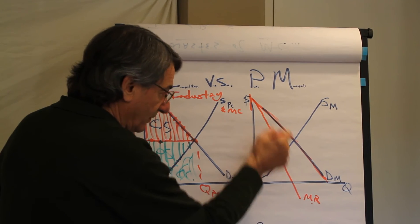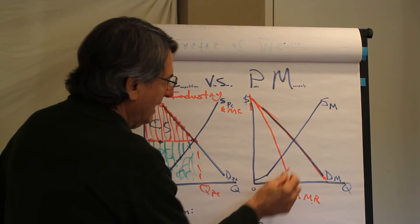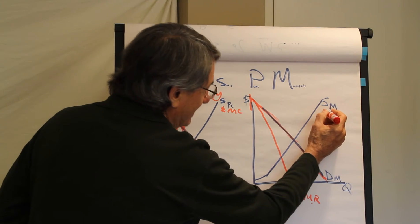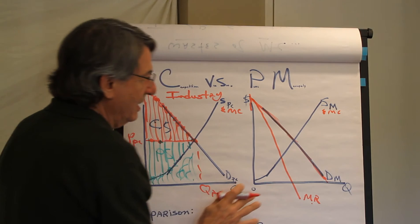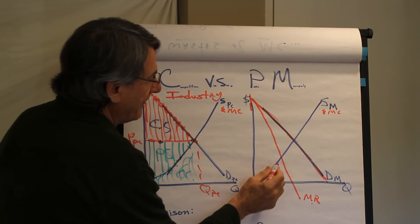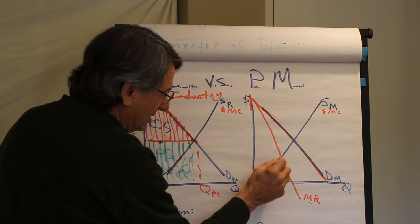So the marginal revenue in this industry, and I'm going to charge everybody one price. There's no price discrimination here. So that's the marginal revenue curve when there's no price discrimination. And this supply curve is something like the sum of the marginal cost curves. It's close enough to supply.